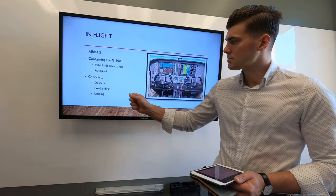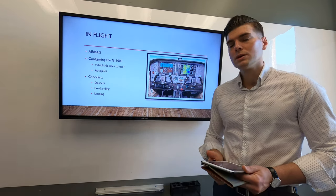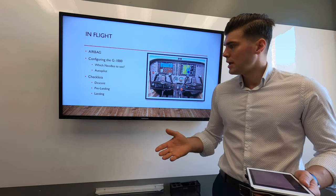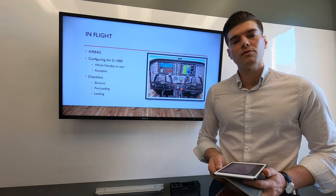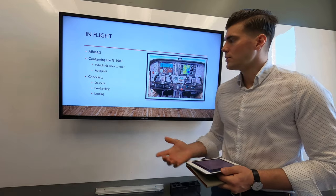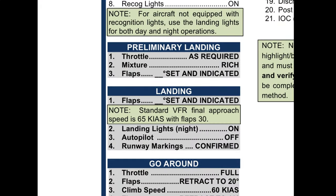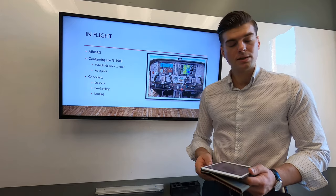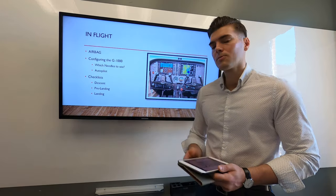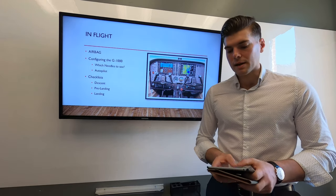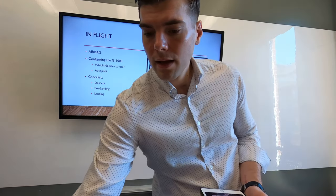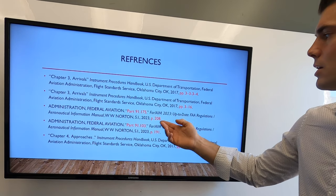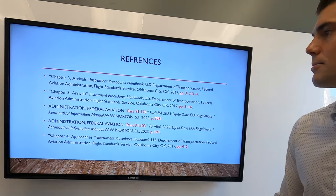Once the descent and pre-landing checklists are complete, all we need to do is disconnect the autopilot and hand-fly the approach to sharpen our stick-and-rudder skills. When we come down to our decision altitude and break out of the clouds with the runway environment or lighting in sight, we do our landing checklist: flaps set, landing lights on at night, autopilot off, and runway confirmed. That is how to brief an instrument approach using the Instrument Procedures Handbook, FAR regulations, and Chapter 4 of the Instrument Procedures Handbook. Thank you.